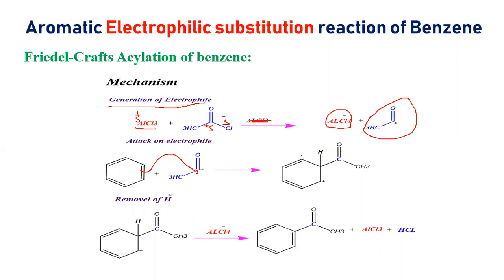Now we have used AlCl4 minus as nucleophile and we have used it to attack and remove the proton. And here we have a bond shift and this will become product. This acyl group is introduced.